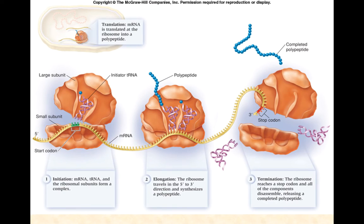Finally, the ribosome reaches one of the stop codons. Unlike the start codon, stop codons don't code for an amino acid. Instead, a release protein reads the stop codon and essentially disassembles the whole complex — releasing the two subunits of the ribosome, releasing the associated tRNAs, and releasing the long chain of amino acids, the polypeptide, which can then fold and become a mature, functional protein.